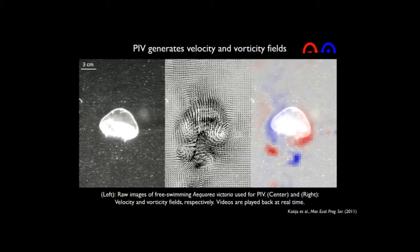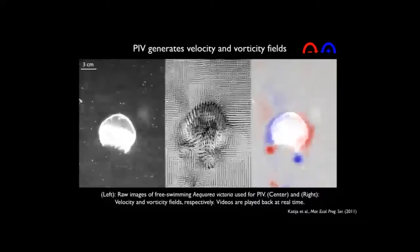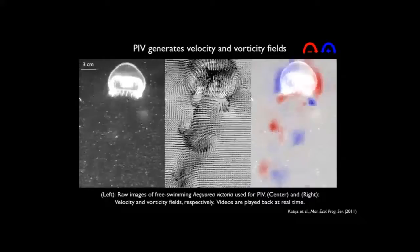Not only do we have high spatial resolution of these velocity fields, but also high temporal resolution. These videos were collected at 30 frames per second, though depending on the imager used, that could be anywhere from 500 to 1,000 frames per second.